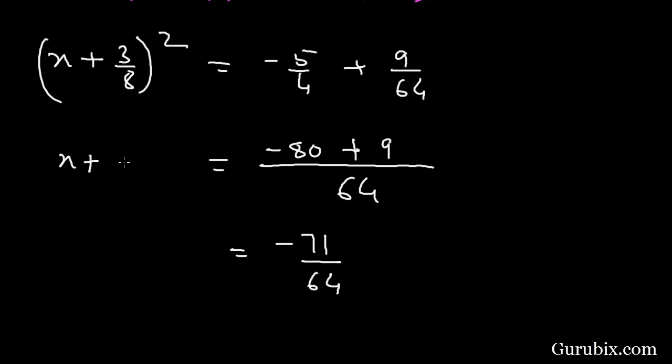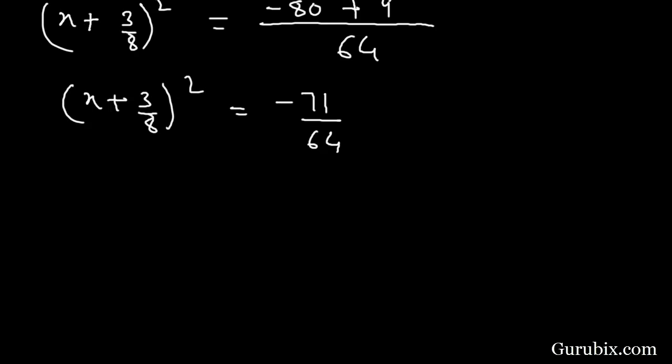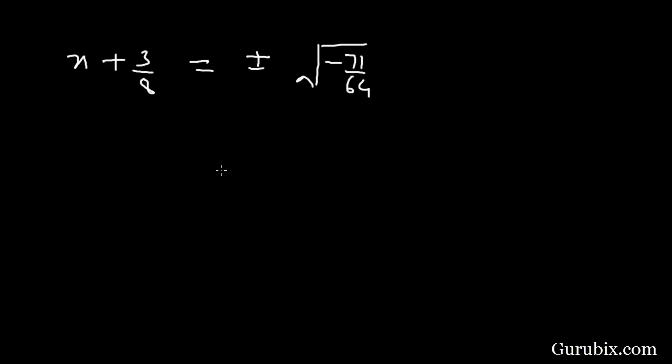Here we have x plus 3 over 8 whole square equals minus 71 over 64. This means x plus 3 over 8 is equals to plus minus square root of minus 71 over 64. This means plus minus square root of minus 71 over 8.